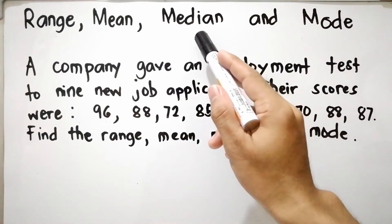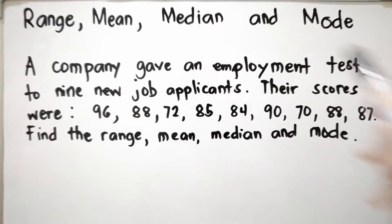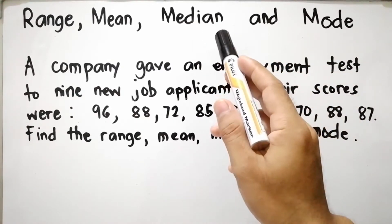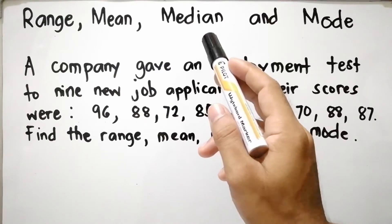Median is denoted as MD or X-tilde. It is the middle value or the mean of two values. Median is not affected by extreme values, but it is affected by the number of values since it is a positional measure.